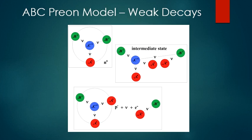Hence, the ABC prion model not only greatly reduces the number of particles that we consider to be elementary, but it also reduces the number of forces, as weak decays are seen to actually be simple quantum tunneling events.